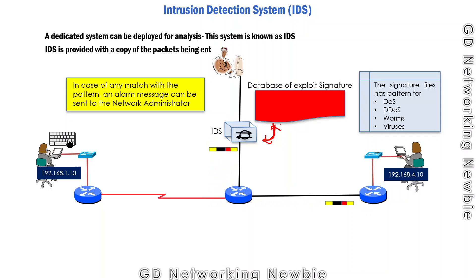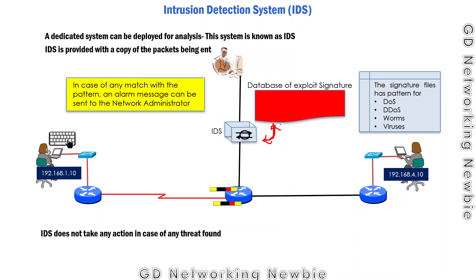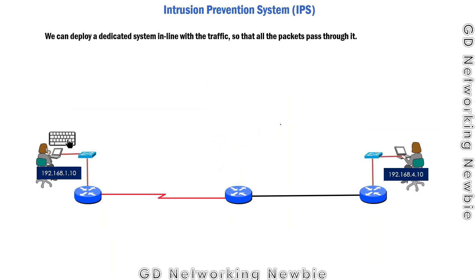So the IDS receives a copy of the message, matches it with the signatures or patterns of potential threats, and if there is any match, an alert is sent to the network administrator. The important point is that the IDS will not take any action — if there is a match it just sends the alert, but it will not block or discard the traffic. Taking action is not the job of the IDS.